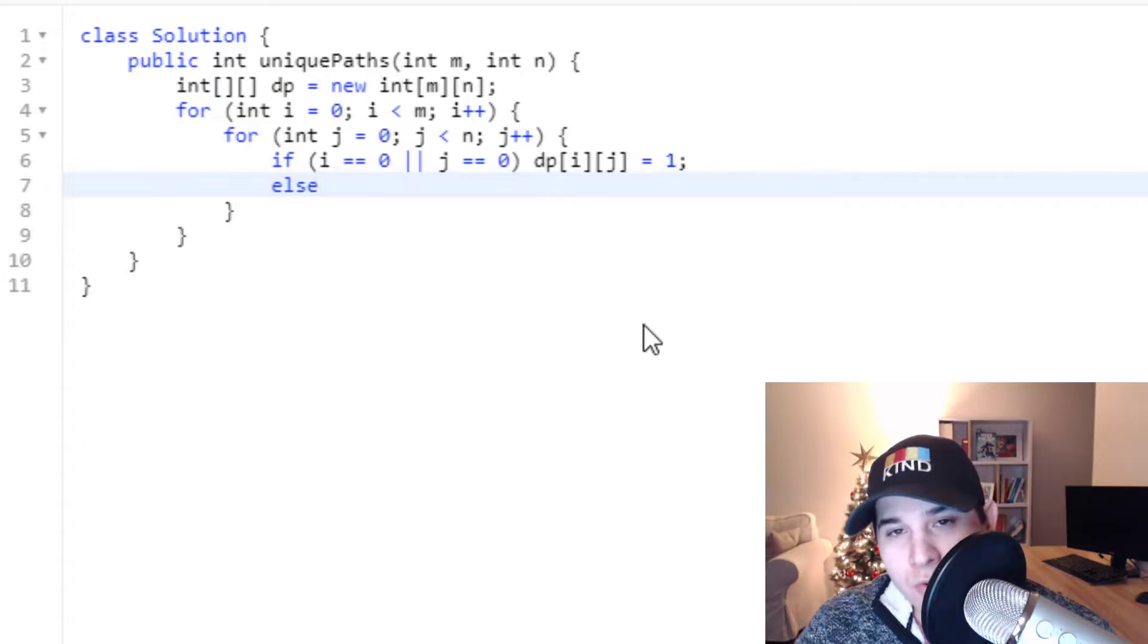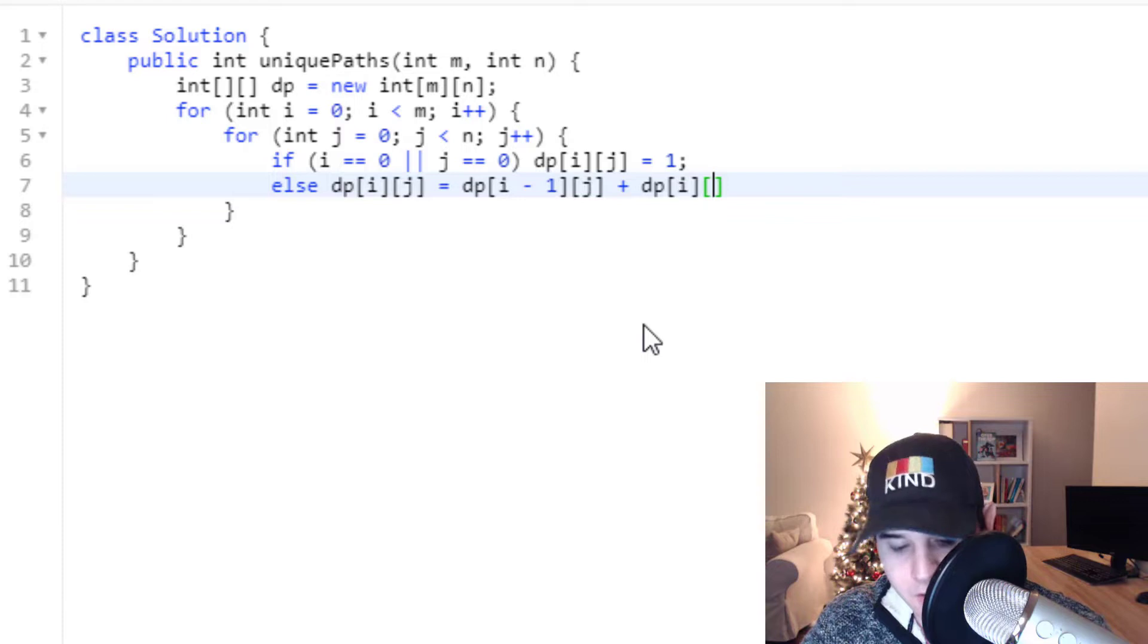If this is not true this is where we use that recurrence relation. So we'll say dp of i j is equal to dp i minus one j plus dp of i j minus one. So we're checking above us and to the left and we're just summing it.